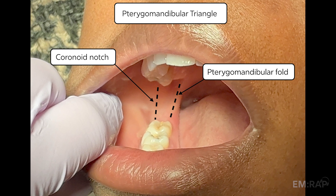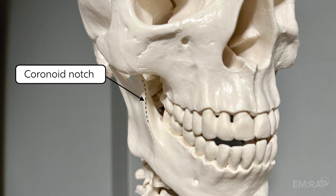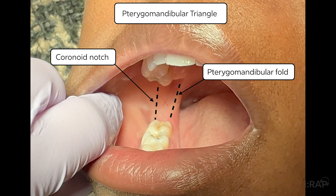The location of the block is the pterygomandibular triangle. To locate it, retract the cheek laterally and focus just above the posterior molar. Identify the pterygomandibular fold medially and the coronoid notch laterally, which is the anterior border of the mandibular ramus.